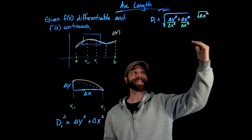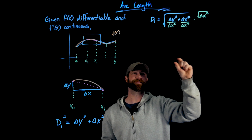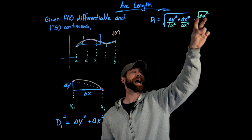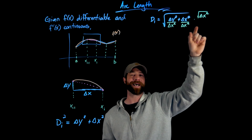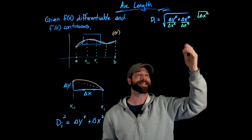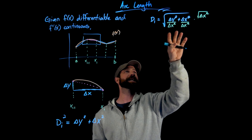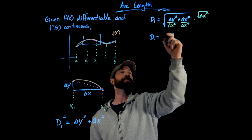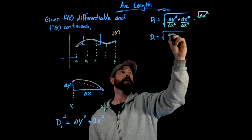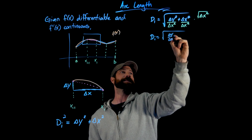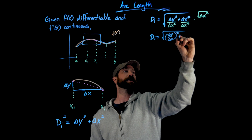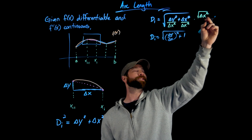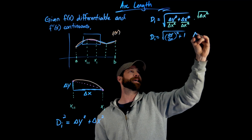I moved in that division of the square root of delta x squared, dividing both terms by delta x squared. I leave the square root of delta x squared on the outside — you'll see the use of that for integration. Inside, the first term becomes delta y over delta x, squared. The second term is just plus one. And on the outside, the square root of delta x squared just gives me delta x.